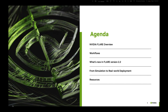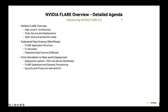I'll also include a few resources that you can use to get started. Going into a bit more detail, we'll talk about the high-level FL architecture, some of the tools, services, and deployments that allow you to move from POC to production. We'll talk about the Flare application structure and the simulator that developers can use to get started, and highlight tools for moving from POC to secure distributed deployments and the way these can be used on AWS.